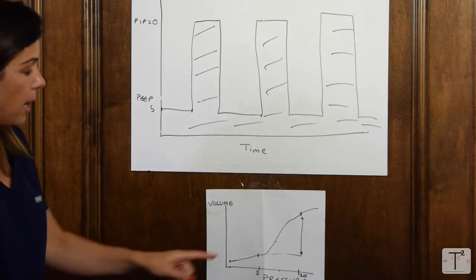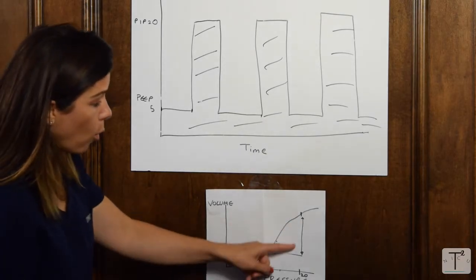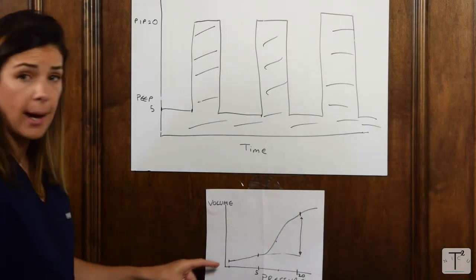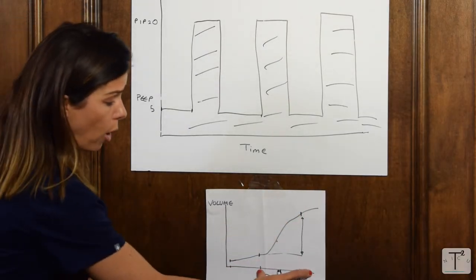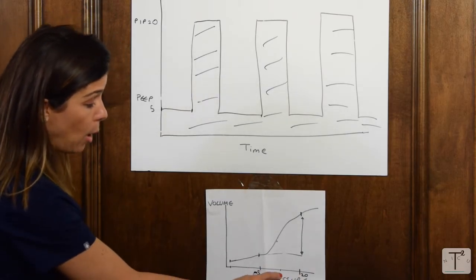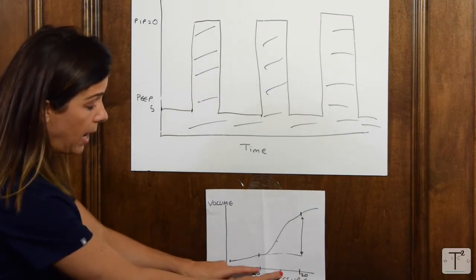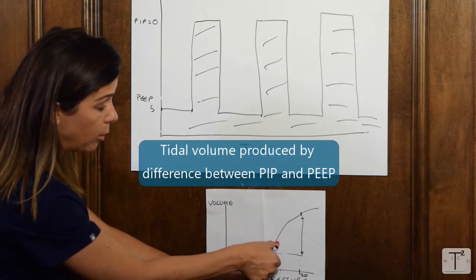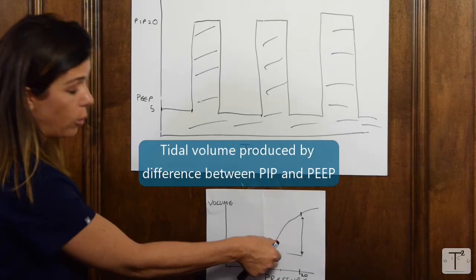Remember this previous graph that we had, and we saw that the tidal volume was dependent not just on the compliance of the curve, but also on the difference in pressure. Here, if your PIP was, let's say that's 12, and this is 5 as your PEEP, then your tidal volume is going to be the difference between them.